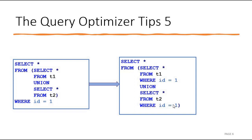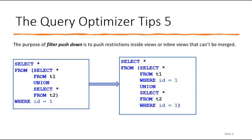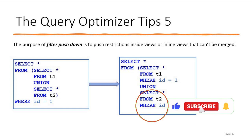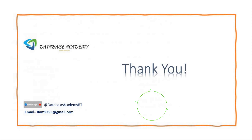We can rewrite this to improve performance by adding the WHERE condition directly inside each part of the UNION ALL — fetching data from t1 where ID equal to 1 and from t2 where ID equal to 1 at the initial stage. The purpose of this technique is called filter pushdown: pushing the restriction inside the view or inline view. We should always try to fetch only the limited data that is required and avoid fetching unnecessary data. It is always better to add a WHERE condition at the initial stage. These are some SQL tips to improve SQL performance.